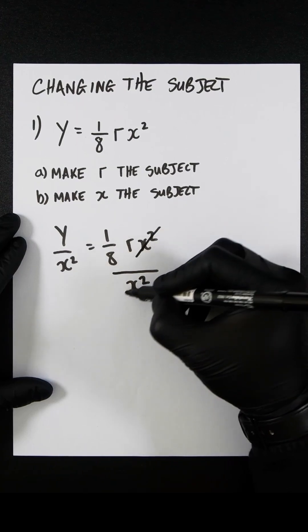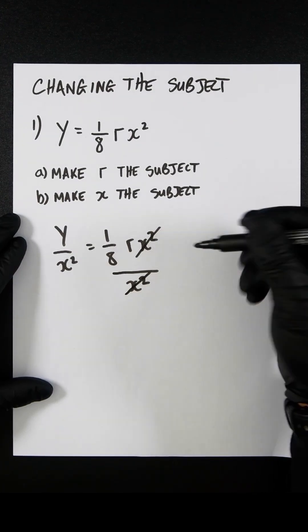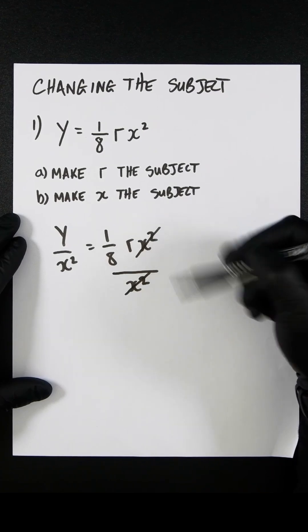As you can see, the x squareds will cancel out. We're now left with y over x squared equals an eighth r.